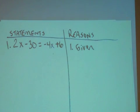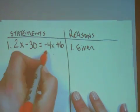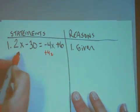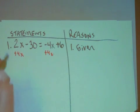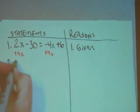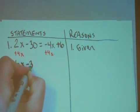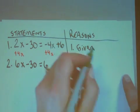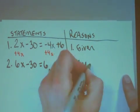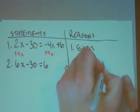Now we want to think, what should we do? Now remember, what I write in orange isn't actually part of the proof, but I'm going to add 4x to both sides. And that's going to help me get to my second statement. The actual second statement is 6x minus 30 is equal to 6. How did I get there? Well, that's the addition property of equality.